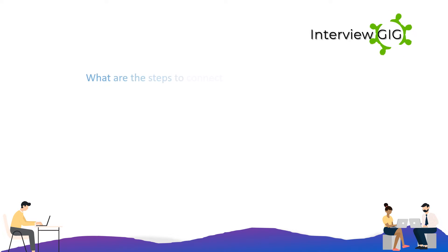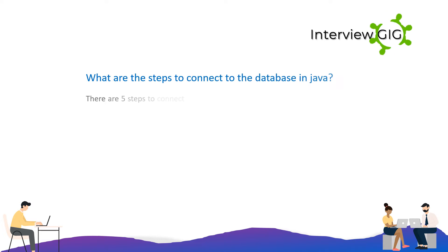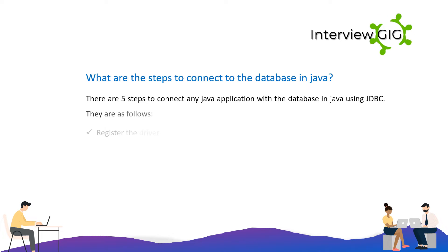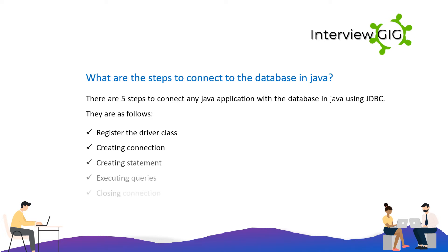What are the steps to connect to the database in Java? There are five steps to connect any Java application with the database using JDBC: register the driver class, creating connection, creating statement, executing queries, and closing connection.